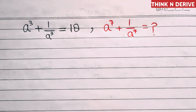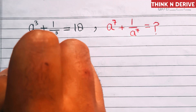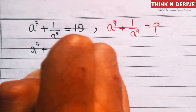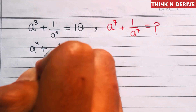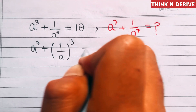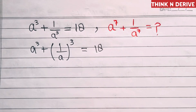Hello everyone, we have a³ + 1/a³ = 18, and we need to find the value of a⁷ + 1/a⁷. So let's start. First of all, we'll write this as (a + 1/a)³ = 18.